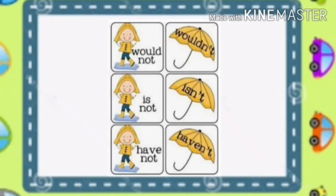Some of the common examples of contractions are: would not becomes wouldn't, is not becomes isn't, and have not becomes haven't.